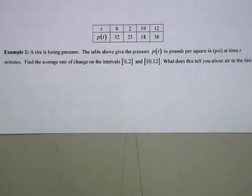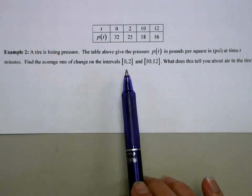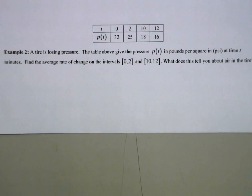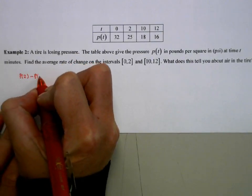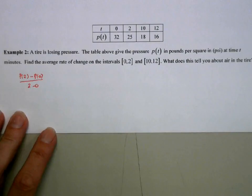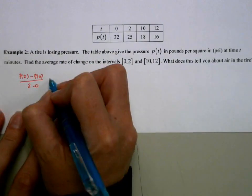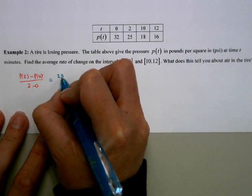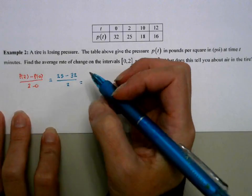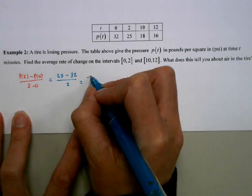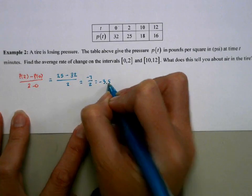Next, we're going to look at an example of a tire that is losing pressure. The table above gives the pressure p of t in pounds per square inch at time t minutes. Find the average rate of change on two different intervals, 0 to 2 and 10 to 12. What does this tell you about that tire pressure? So we're going to do p of 2 minus p of 0 over 2 minus 0. p of 2 is 25, p of 0 is 32 over 2. This simplifies down to negative 7 over 2 or negative 3.5.